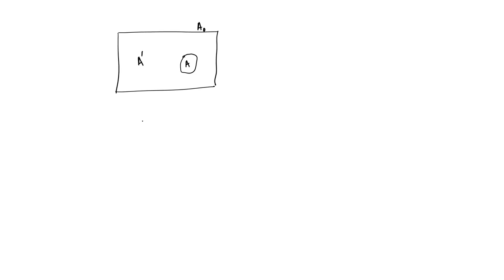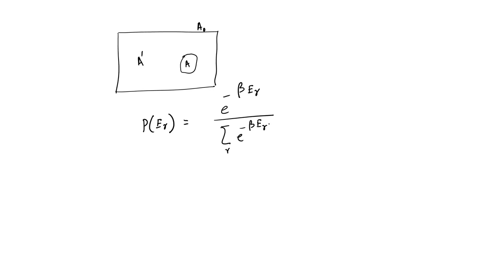What we have derived is the probability that our system occupies a certain energy level E_R. The normalized probability is given by exponential(-β E_R) divided by the summation over R of exponential(-β E_R). This denotes the probability that system A is found in one of the available energy states E_R.